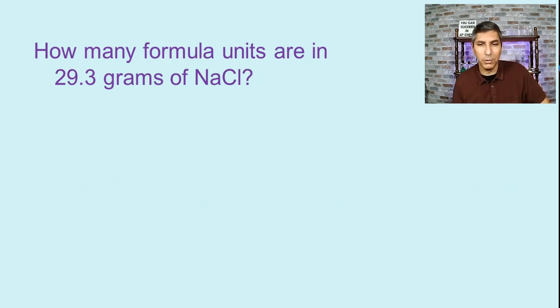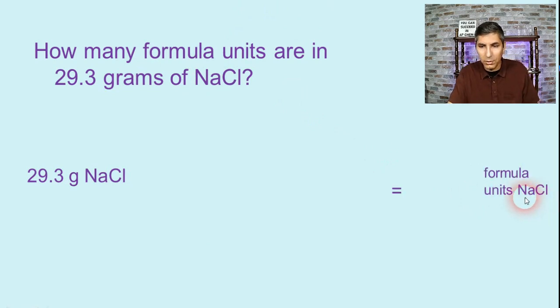This one says, how many formula units are in 29.3 grams of sodium chloride? Now, a formula unit is just the most fundamental unit of an ionic compound. We'll talk more about that here in an upcoming video. Formula unit is, I guess, kind of like a molecule would be, but for an ionic compound. Now, let's start out with 29.3 grams of NaCl. And the question is, how many formula units? So way down here at the end, we're going to have formula units of NaCl. So if we look at our roadmap, we can see how many steps this will be. This is a two-step process. If we're converting from grams to formula units, what do we have to convert to first? Well, that would be moles, wouldn't it? All roads lead to moles.